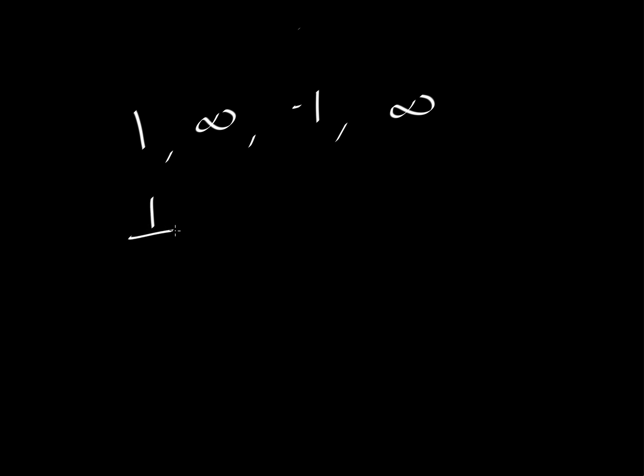So if we invert these, then we get 1 over 1, 1 over infinity, 1 over minus 1, and then 1 over infinity again. That would give us 1, 0, minus 1, and 0 again. A minus 1 gets a bar over it.